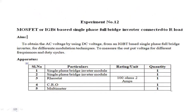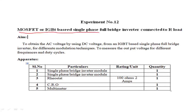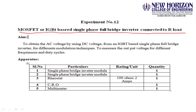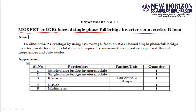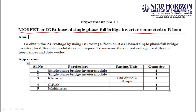In this video we'll discuss the working of a MOSFET or IGBT based single phase full bridge inverter connected to R-load. An inverter converts DC to AC. Almost everyone has this device at home — it converts DC from a battery into AC for domestic loads.